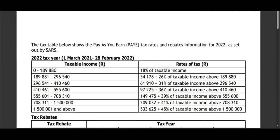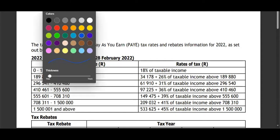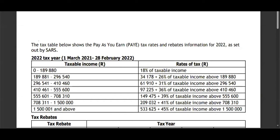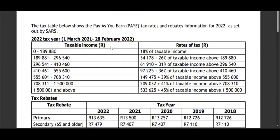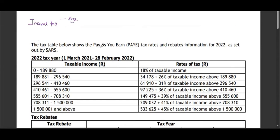Let's look at income tax calculations. How is it calculated? You have to know the following: first, you need to know the age of the person. The age will determine which bracket the person belongs to when it comes to rebates and threshold.